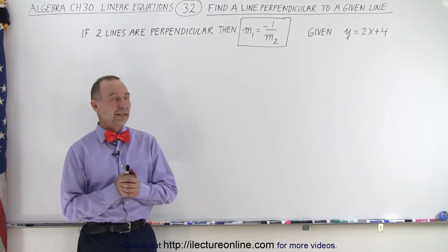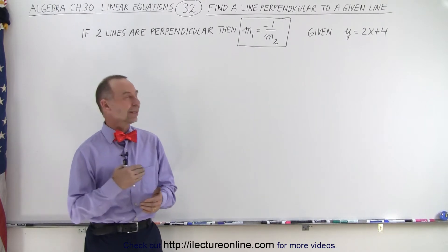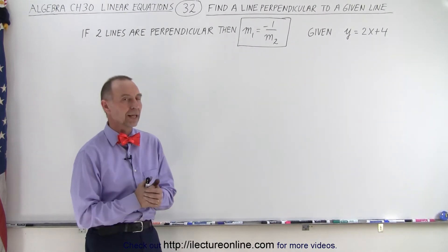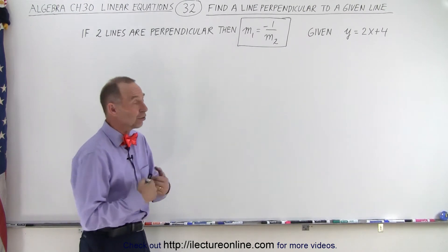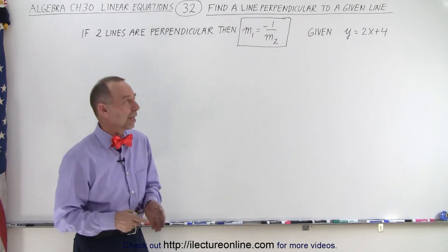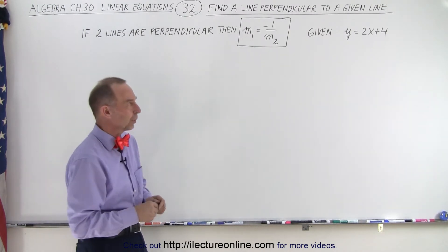Welcome to Electron Line. When we take a look at the title here, it says find a line perpendicular to a given line. They're not asking for THE line because there's no such thing as THE line. There's an infinite number of lines that can be perpendicular to this line, and we'll see in just a moment what that means.